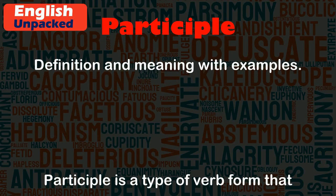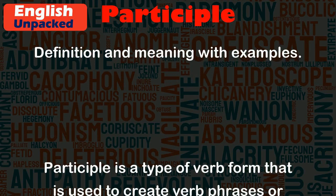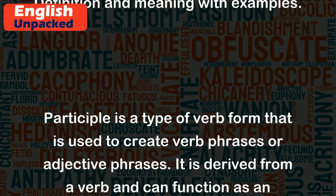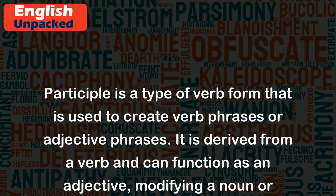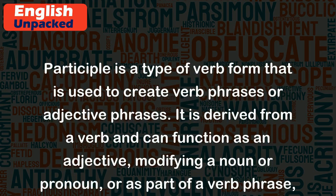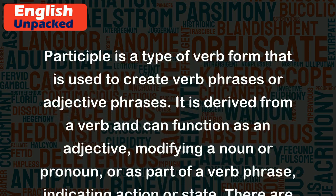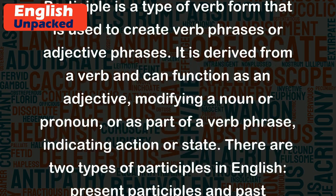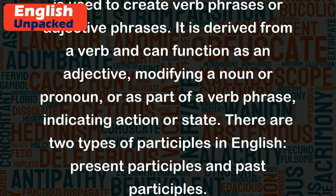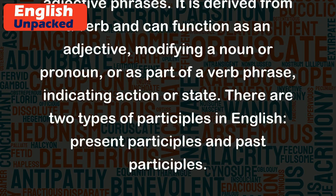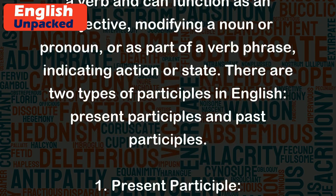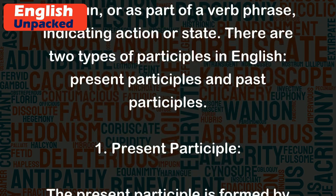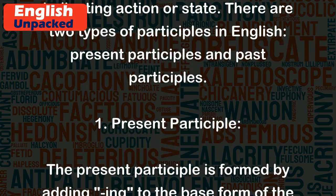Participle is a type of verb form that is used to create verb phrases or adjective phrases. It is derived from a verb and can function as an adjective, modifying a noun or pronoun, or as part of a verb phrase, indicating action or state. There are two types of participles in English: present participles and past participles.